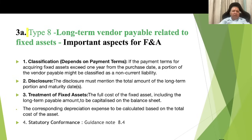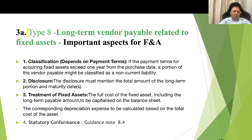Type 8 — long-term vendor payable related to fixed assets. Important aspects: classification — if the payment terms for acquiring fixed assets exceed one year from the purchase date, a portion of the vendor payment might be classified as a non-current liability. Disclosures must mention the total amount of the long-term portion and maturity dates. Treatment of fixed assets — the full cost of the fixed asset, including long-term payable amounts, is to be capitalized on the balance sheet, with depreciation calculated based on total cost as usual.